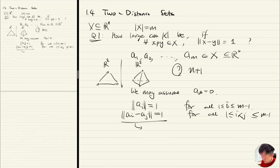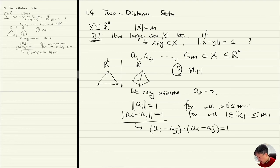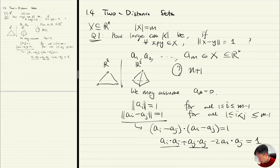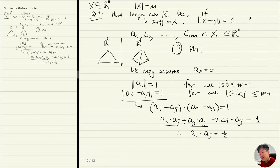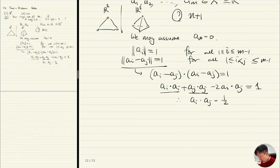Now let's look at this. If I take the squared distance, |a_i - a_j|^2 = 1, this is the same as a_i·a_i + a_j·a_j - 2·a_i·a_j = 1. I know that a_i·a_i = 1 and a_j·a_j = 1, so this gives us a_i·a_j = 1/2.